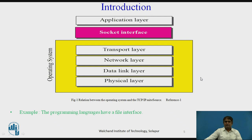To access the services provided by the TCP/IP protocol suite, an application needs to use the instructions defined in the socket interface. For example, most programming languages have a file interface — a set of instructions that allow the programmer to open a file, to read from the file, to write into the file, perform some other operations, and finally close it. When a program needs to open a file, it uses the name of the file as it is known to the operating system. When the file is opened, the operating system returns a reference to the file as an integer or pointer that can be used for other instructions such as read and write.